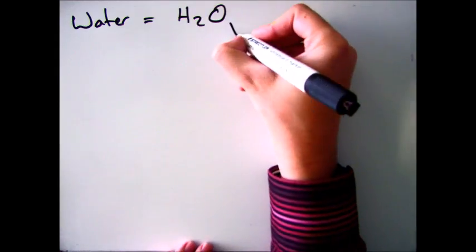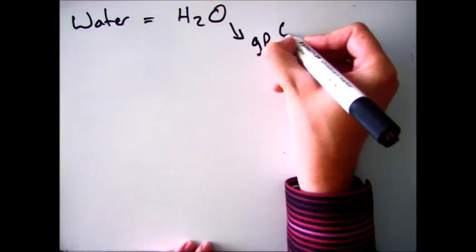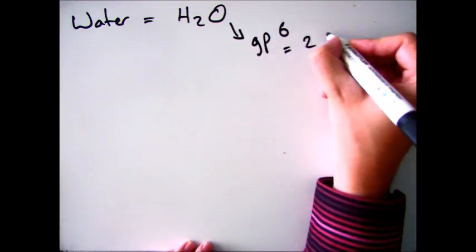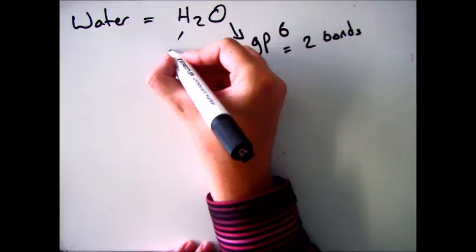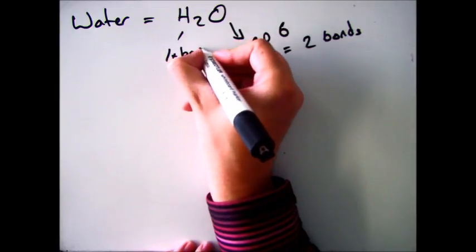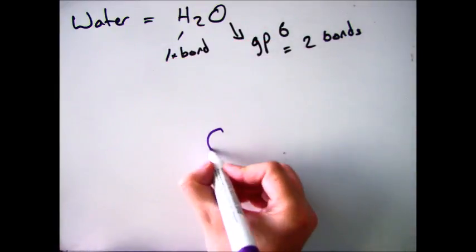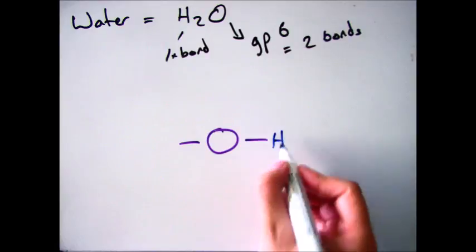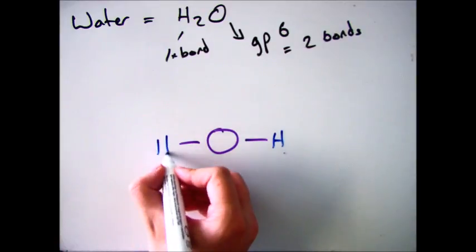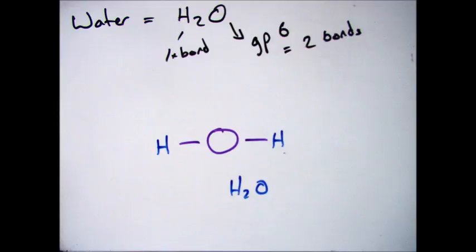Another example is water, H2O. We've got oxygen, which is in group 6. If it's in group 6, it means it needs to gain 2 electrons and can form 2 bonds. Hydrogen can form 1 bond. So you put your oxygen in the middle, and that can make 2 bonds, and therefore it's got to be filled up with a hydrogen either side — both hydrogens forming 1 bond and oxygen forming 2.